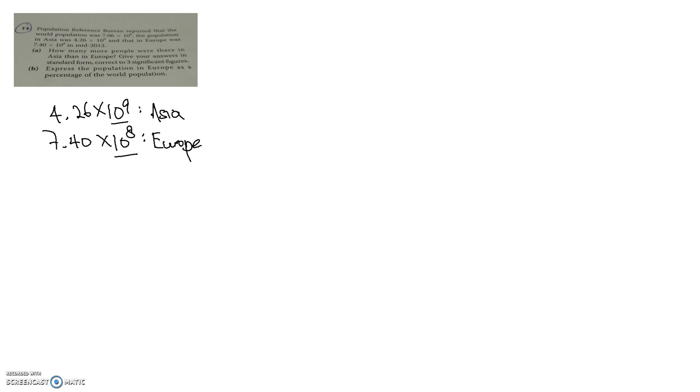There's a neat little trick. One way that students will do is they will take the population of Asia, 4.26. This is 2 zeros already. Then they have 1, 2, 3, 4, 5, 6, 7. And then in Europe 7, 4, 0. That's 2 zeros, 1, 2, 3, 4, 5, 6.